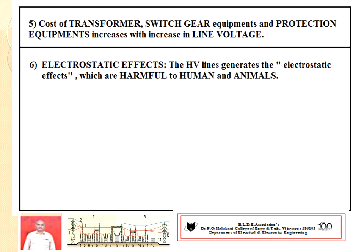Lastly, as the voltage of the system changes, the equipment used in the power system — such as transformers, switchgear, and protective equipment — must be upgraded as per the new voltage rating, which increases the cost of the system. Also, AC transmission lines are associated with electrostatic effects which are harmful to human and animal life. These are some of the key disadvantages.